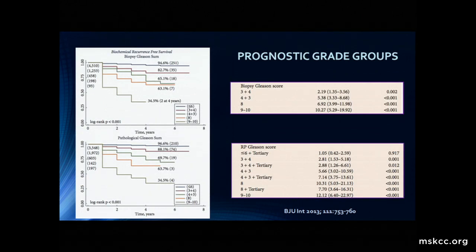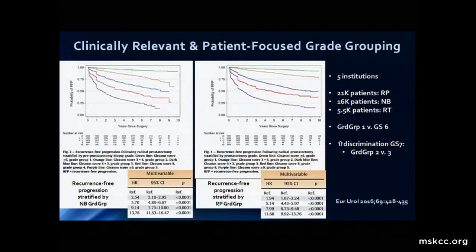This evolved because of the need for clinically relevant and patient-centered grading to this notion, ushered in by a 2013 paper from Johns Hopkins, of prognostic grade groups — rather than grouping things as less than or equal to 6, 7, and 8 through 10, we can do better with a 5-tiered scheme. A meta-analysis from five international institutions showed recurrence-free progression stratified by needle biopsy and radical prostatectomy, demonstrating this 5-tiered system works. Importantly, we can now tell a patient they have grade group 1 and not 6 out of 10, and that notion has been widely accepted.